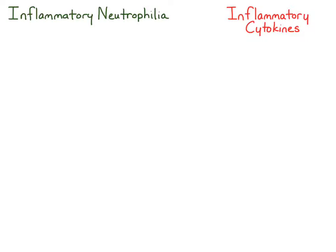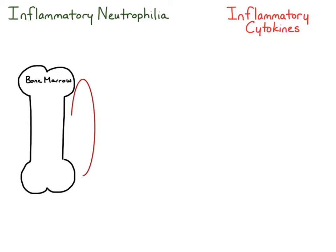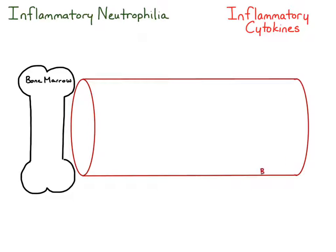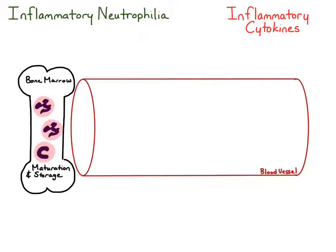To explain how an inflammatory neutrophilia occurs, I'm going to draw the bone marrow as well as a blood vessel. Within the bone marrow, there is a storage pool of mature neutrophils — represented by two segmented neutrophils — and there are also neutrophil precursors within a maturation pool, represented by one band neutrophil at the bottom.